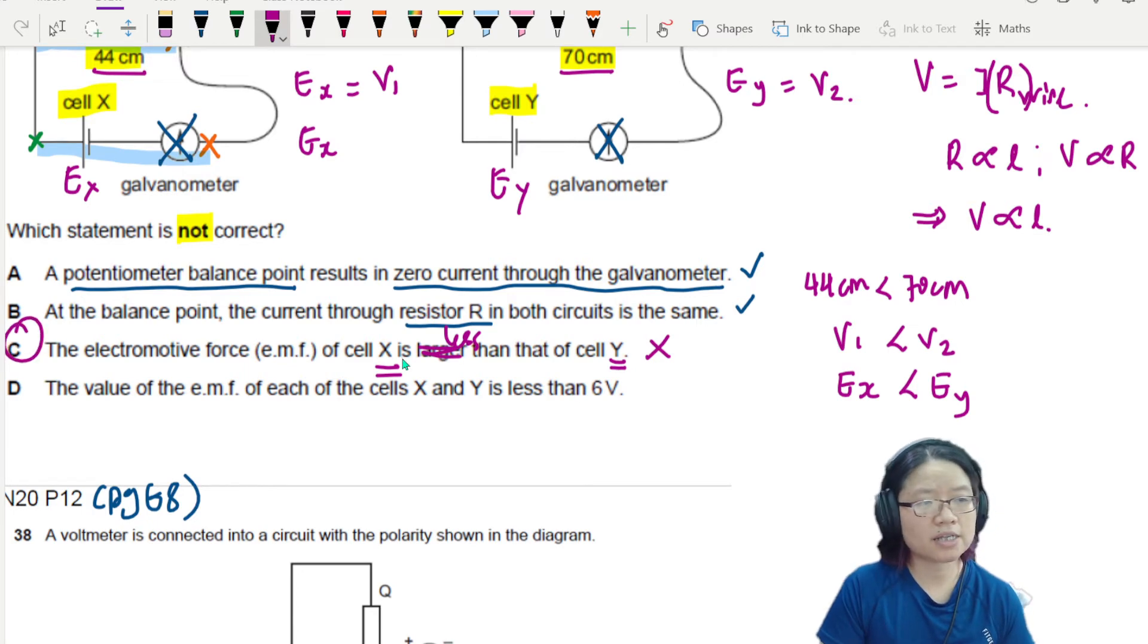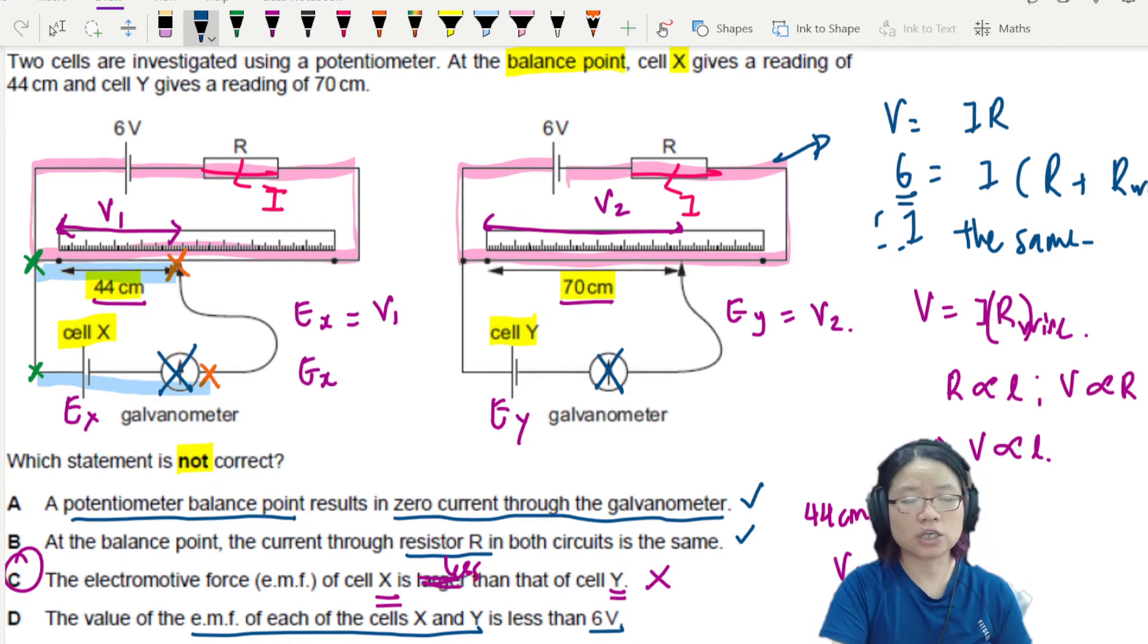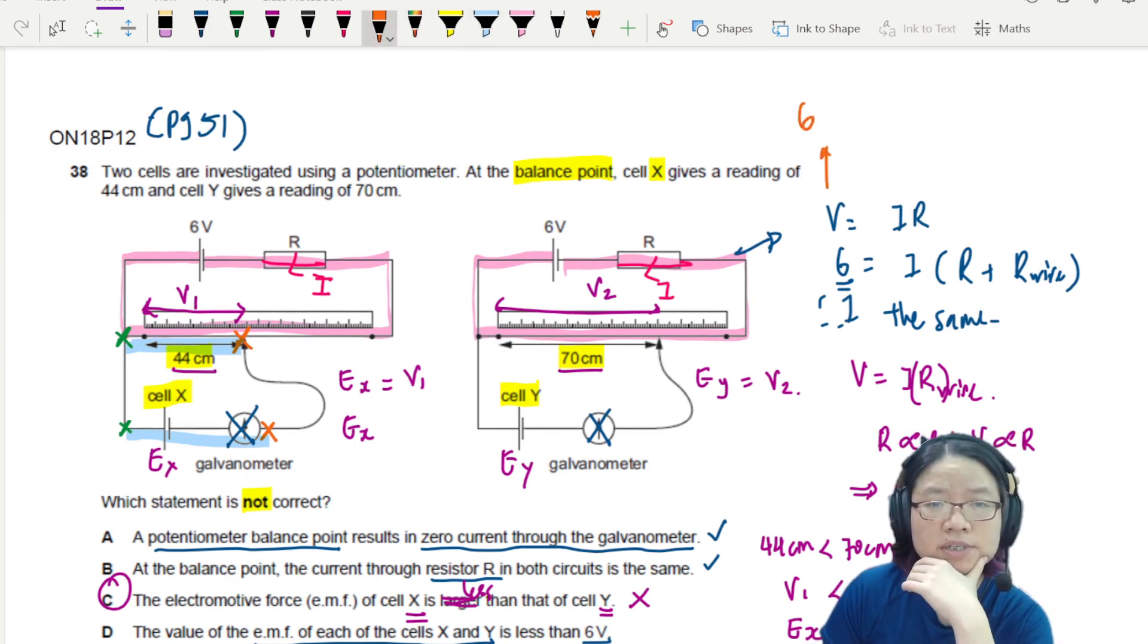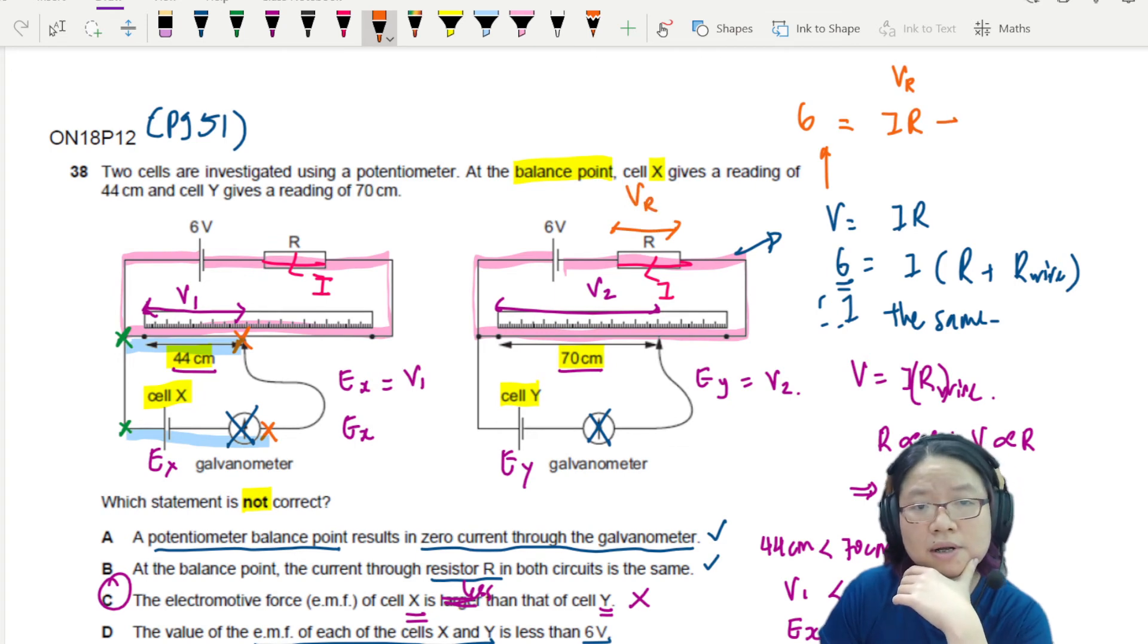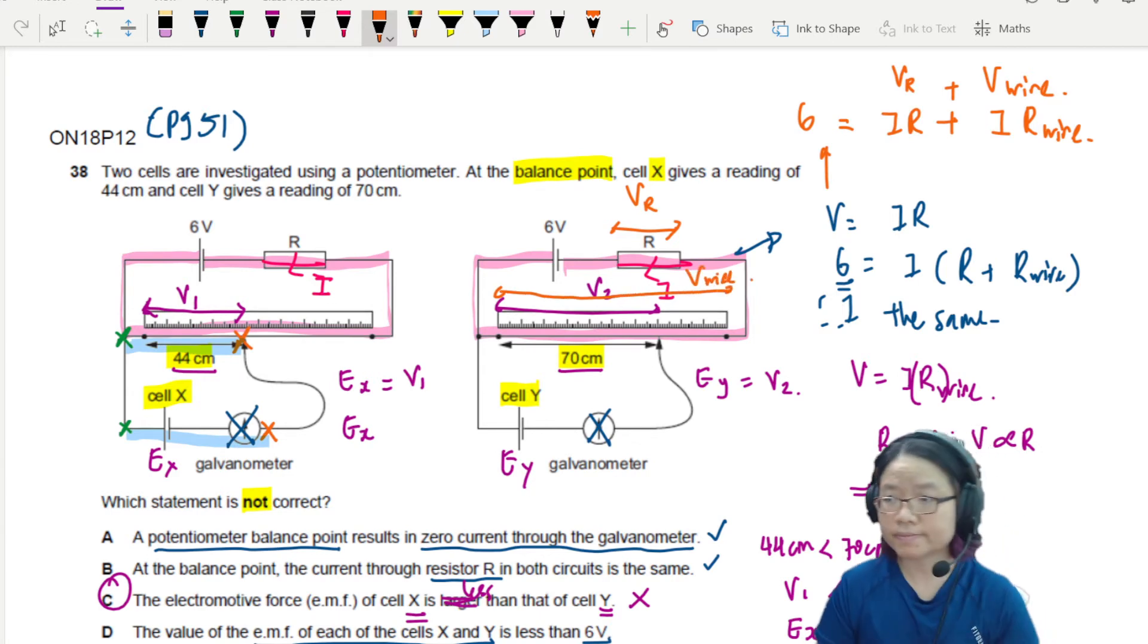But let's confirm D first. The EMF of each cell X and Y is less than 6V. Let's go back to the graph. So this 6V is shared equally, this 6V is shared equally between R and the wire. Let me zoom out a bit. So if you think about the 6 here, this one is 6. This is equal to IR, which is VR. VR is here to here, potential difference across the resistor, plus IR wire. So this one will be the potential difference across the wire, which is here all the way to here.